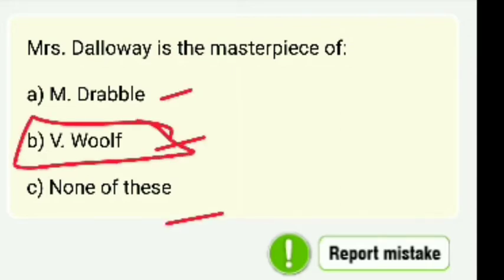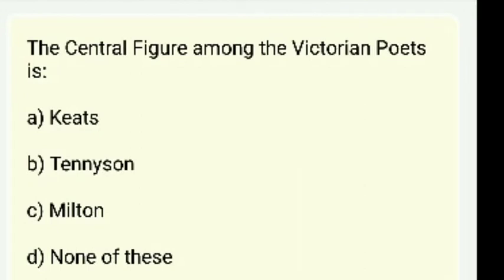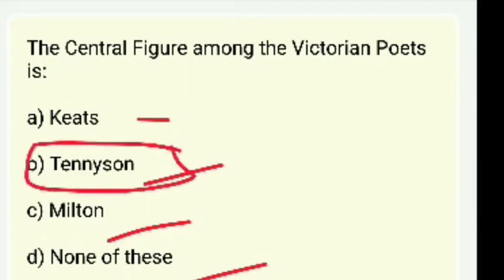This is the central figure among Victorian poets. Who was the central figure among Victorian poets? Options are Keats, Tennyson, Milton, or none of these. The answer is Tennyson — Tennyson was the central figure of the Victorian poets.